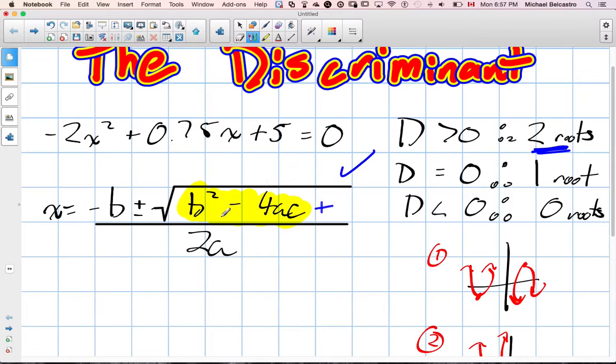If the number underneath is zero, the square root of zero is zero. So you're going to be adding and subtracting zero, which won't change anything. So you only get one.